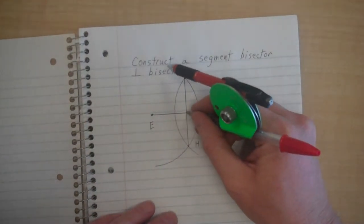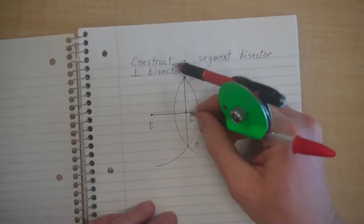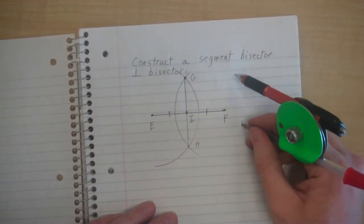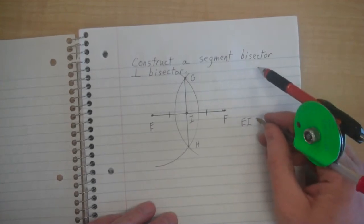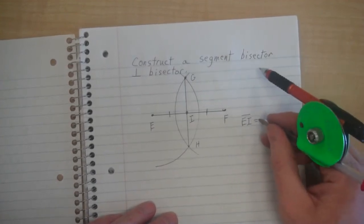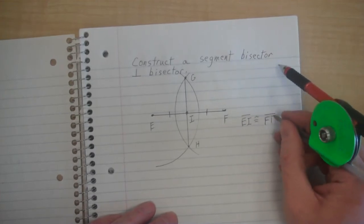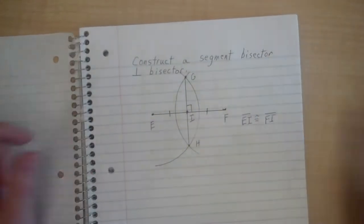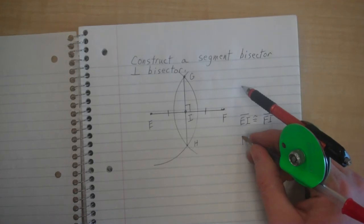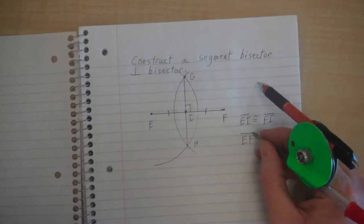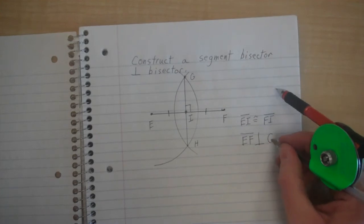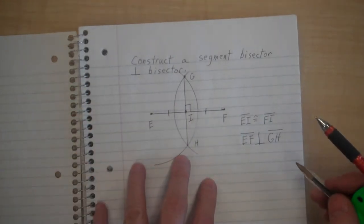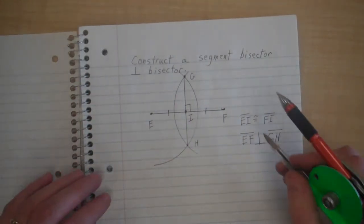These two points, the points of our football, I'm going to call G and H, and I'm going to connect them with my straightedge. What I've done is, we call this point I right here. EI and FI are congruent. Segment EI is congruent to segment FI, which means we've bisected the segment. In addition to that, that is a right angle. So EF is perpendicular to GH. We've made the perpendicular bisector.